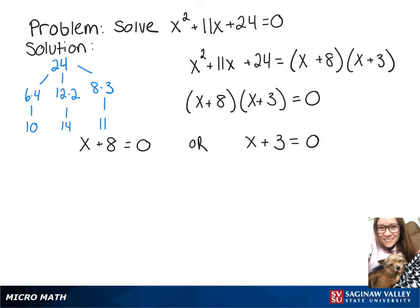So we're going to end up with two solutions here. If we look at our equation on the left, when we subtract 8 from both sides, we'll get one of our solutions, x equals negative 8.